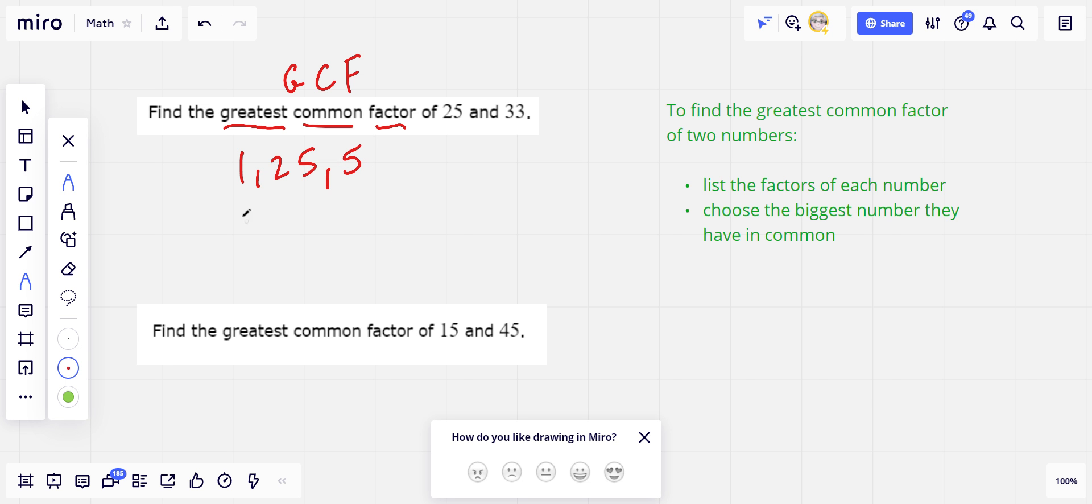So 33. Well, first of all, I know 1 and 33 are factors because they are for everything. 1 in itself is a factor for everything.